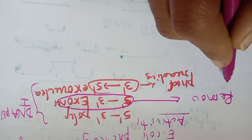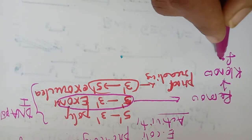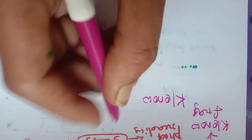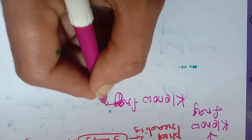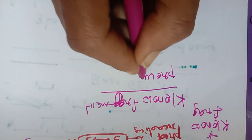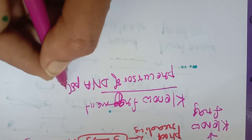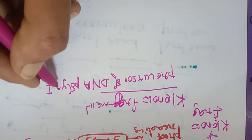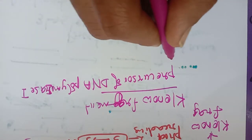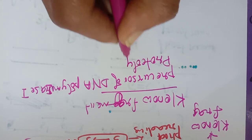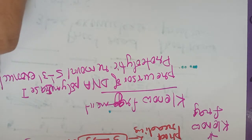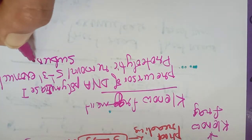Once the subunit responsible for 5' to 3' exonuclease activity is removed, we will get the Klenow fragment. So the Klenow fragment is derived from DNA polymerase I, obtained by the proteolytic removal of the 5' to 3' exonuclease subunit.